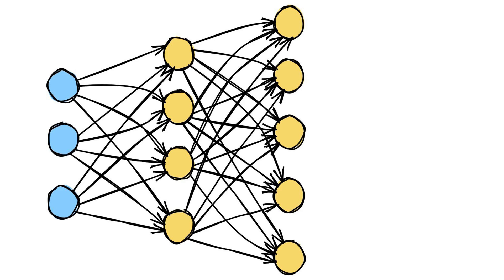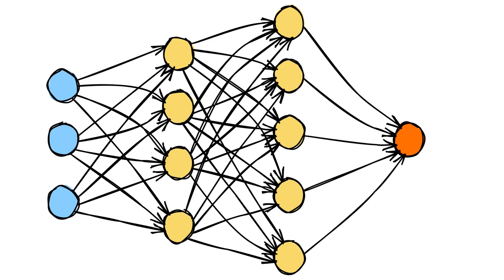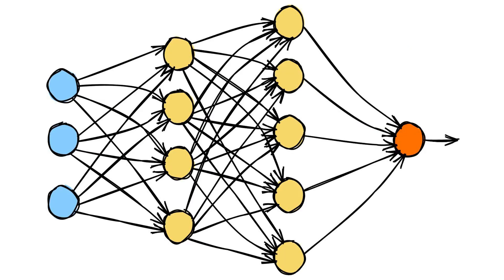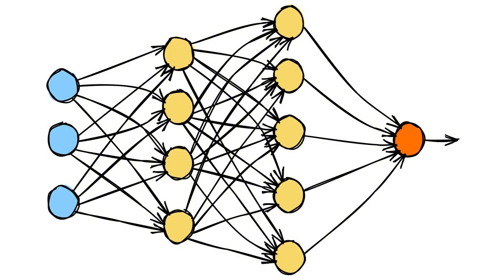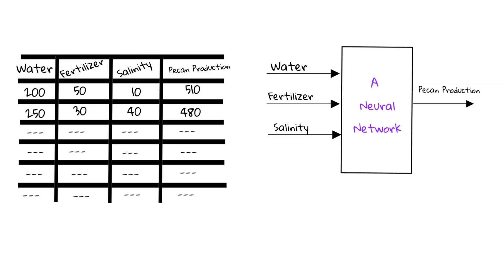There can be more layers, each with an arbitrary number of neurons except for the last layer. Regardless of how many layers we have, the last layer is the output layer. The number of neurons in the output layer depends on what we are trying to predict. For our pecan production data, since we are predicting just one variable, the output layer has just one neuron. Overall: first we have the input layer containing the independent variables — water amount, fertilizer amount, and salinity level — then multiple hidden layers, then the output layer.